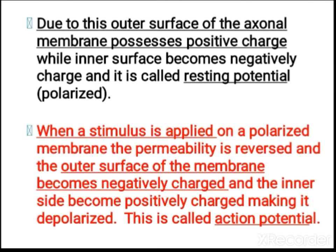Due to this, the outer surface of the axon membrane possesses a positive charge and the inner surface becomes negatively charged. This condition is called the resting potential or polarized state. When a stimulus is applied on a polarized membrane, the permeability is reversed — the outer surface of the membrane becomes negatively charged and the inner side becomes positively charged. This condition is called depolarization, and this is the action potential.